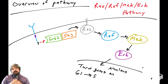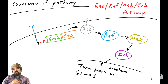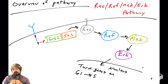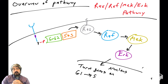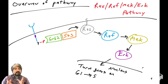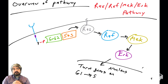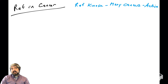We're going to continue talking about the RAS-RAF-MEK-ERK pathway. We've talked about RAS, and we've talked about RAF, and we've talked about how RAF phosphorylates and activates MEK as part of a kinase cascade. We need to talk a little bit more about RAF because RAF is commonly dysregulated in human cancers and is also a target for drugs that can be used to treat cancers.